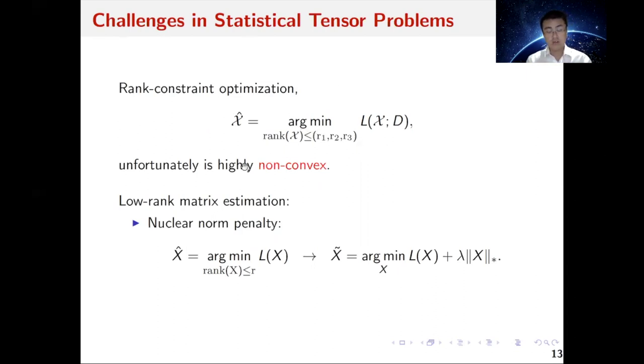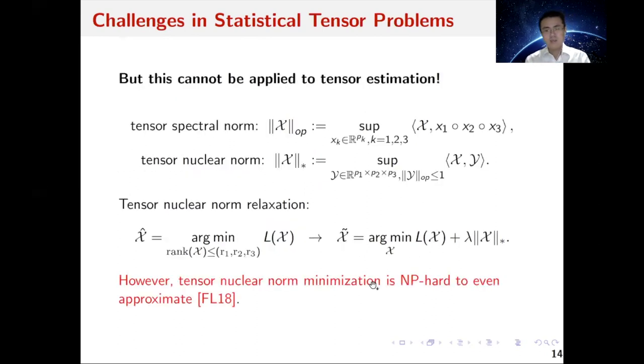Unfortunately, this rank constraint optimization is highly non-convex because the low-rank tensor set itself is highly non-convex. Before we talk about our procedure, let's go back and reduce the tensor to a matrix to see what happens there. If X is a low-rank matrix, during the past decades this problem has been widely and extensively studied. The traditional method is to use the nuclear norm for regularization.